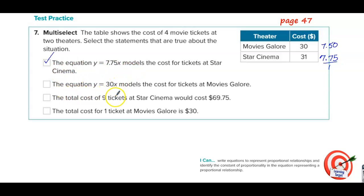The total cost of nine tickets at Star Cinema would be $69.75. Well Star Cinema, what we need to do then is multiply $7.75 times nine. Don't worry, I have the calculator. $7.75 times nine is $69.75. Check. That's right. And the total cost for one ticket at Movies Galore is $30. Nope. No way. Not true. No. Next.